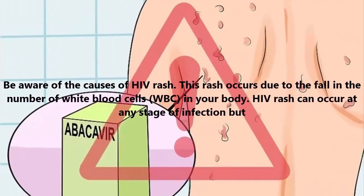Be aware of the causes of HIV rash. This rash occurs due to a fall in the number of white blood cells (WBC) in your body. HIV rash can occur at any stage of infection, but generally you notice it two to three weeks after contracting the virus. This phase is called seroconversion, which is when the infection becomes detectable via a blood test. Some people may skip this phase and develop HIV rash in the later stages.